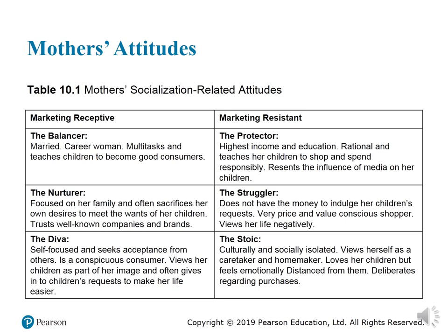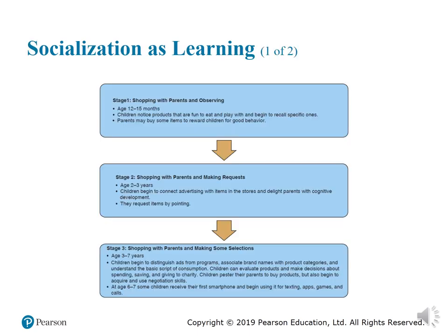The stoic views herself as a caretaker and homemaker. She loves her children but feels emotionally distanced from them. She is deliberate regarding purchases — more conservative, possibly based on income and social class. Socialization attitudes are available in the figure in front of you at page 273.